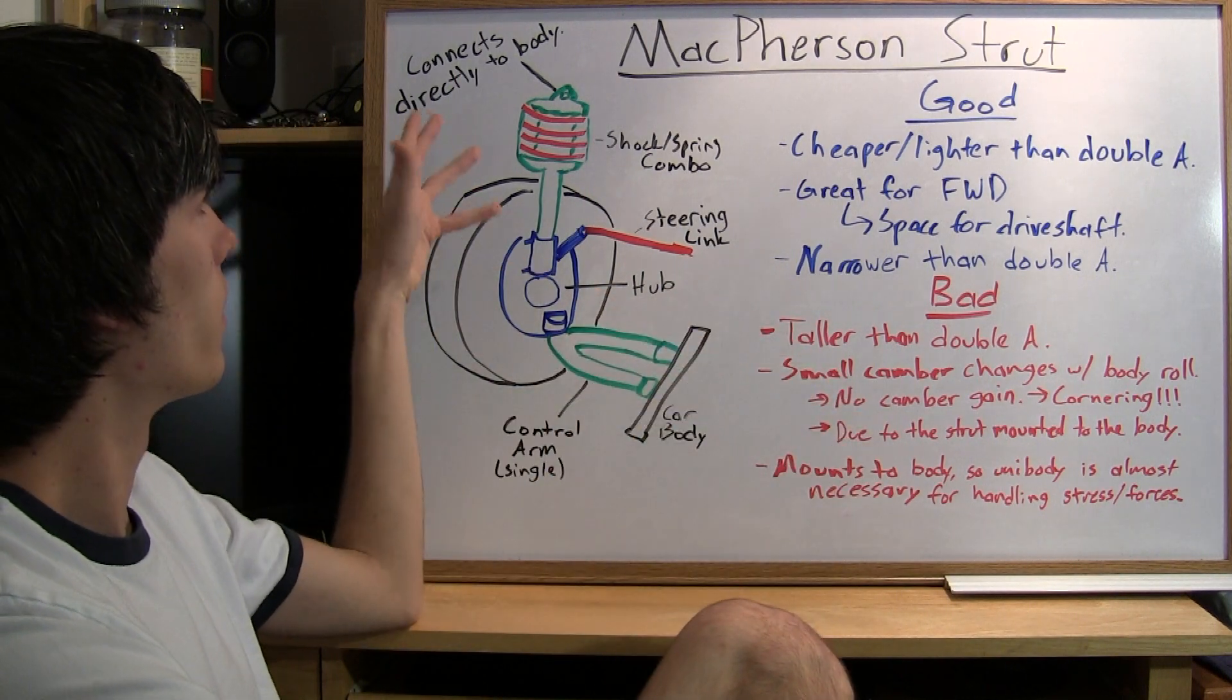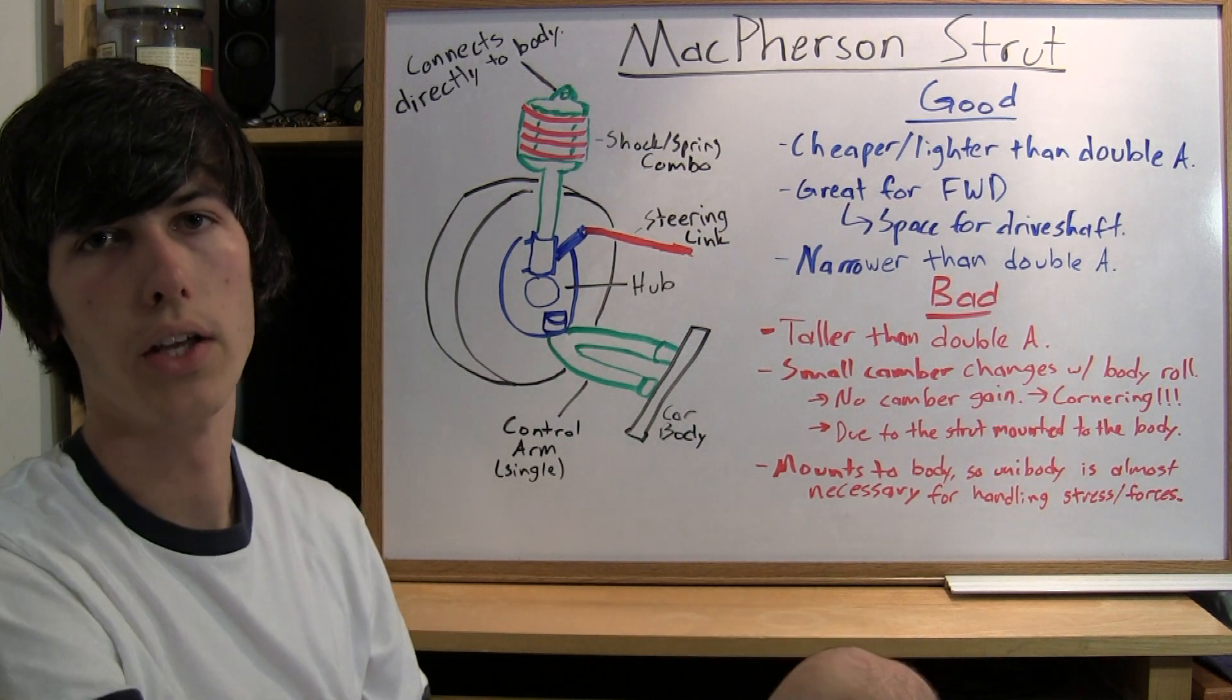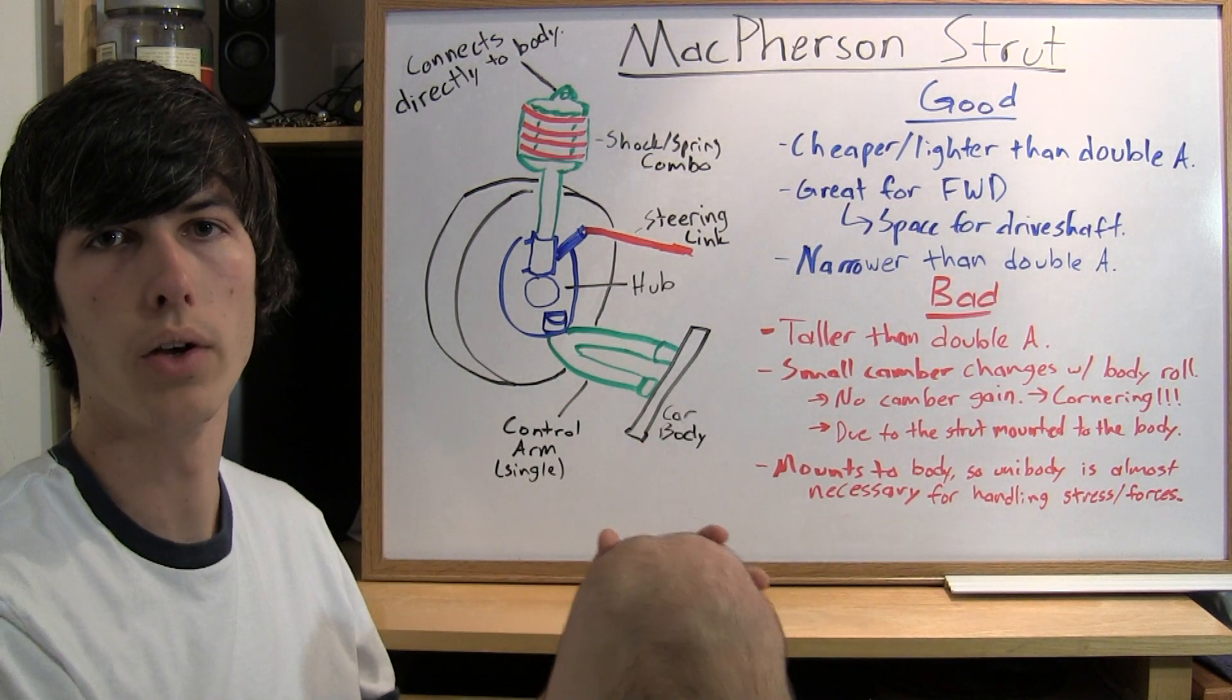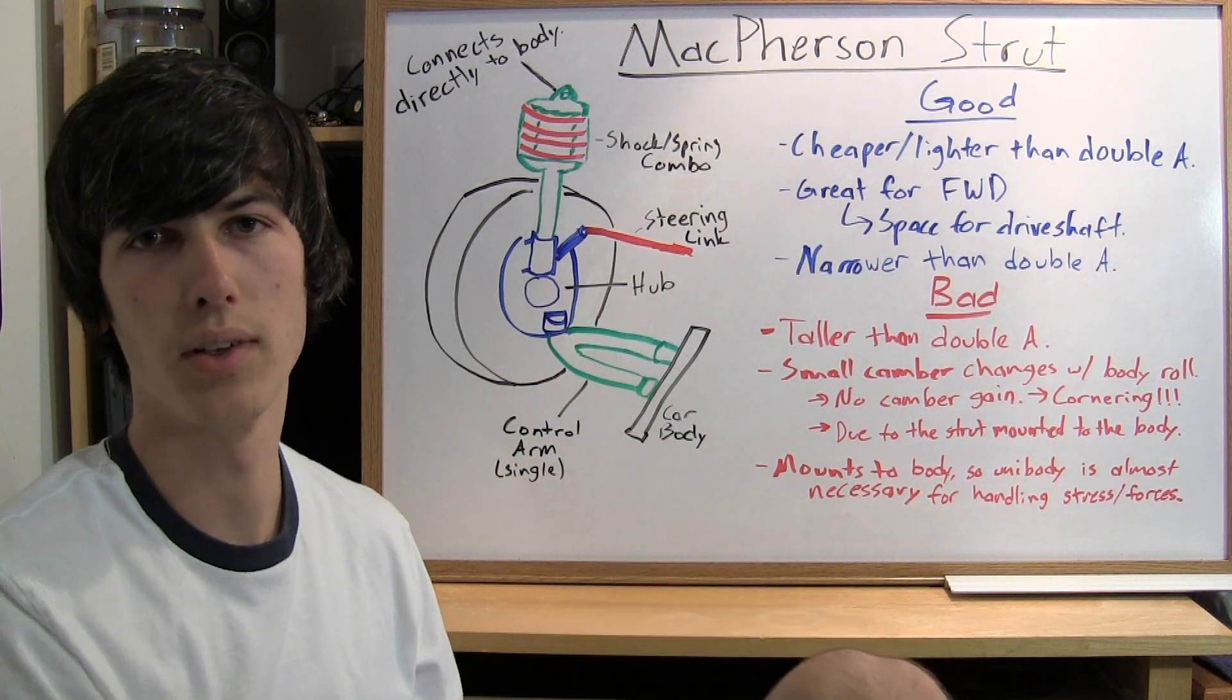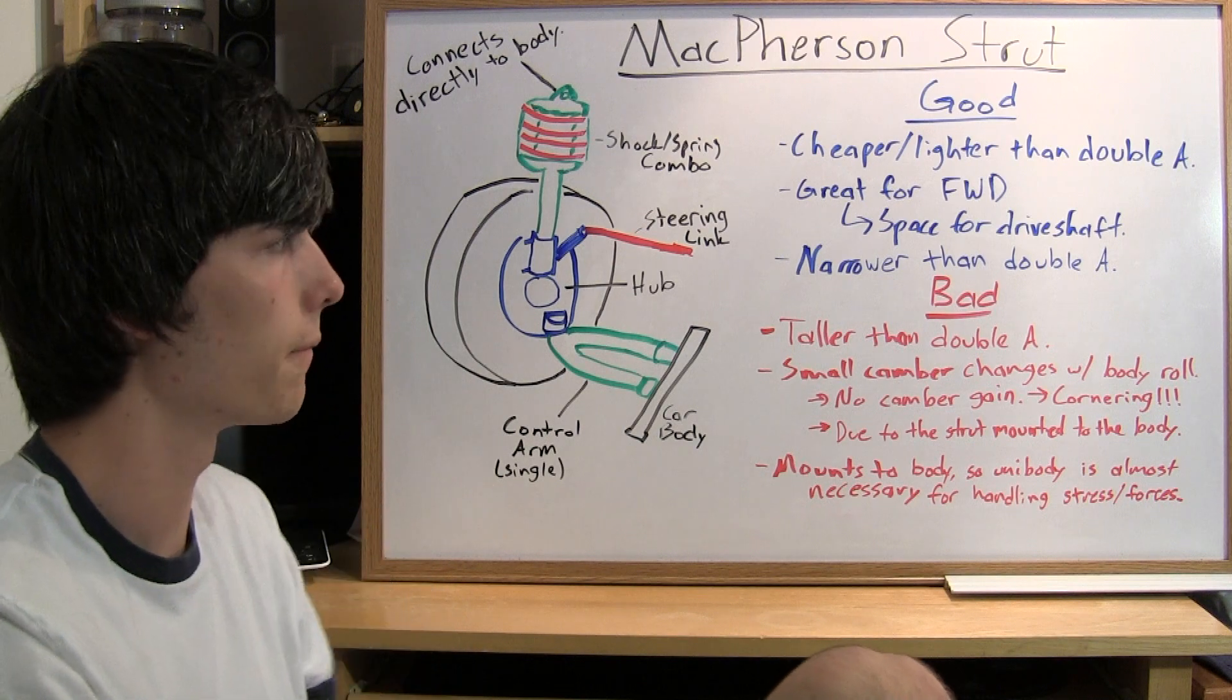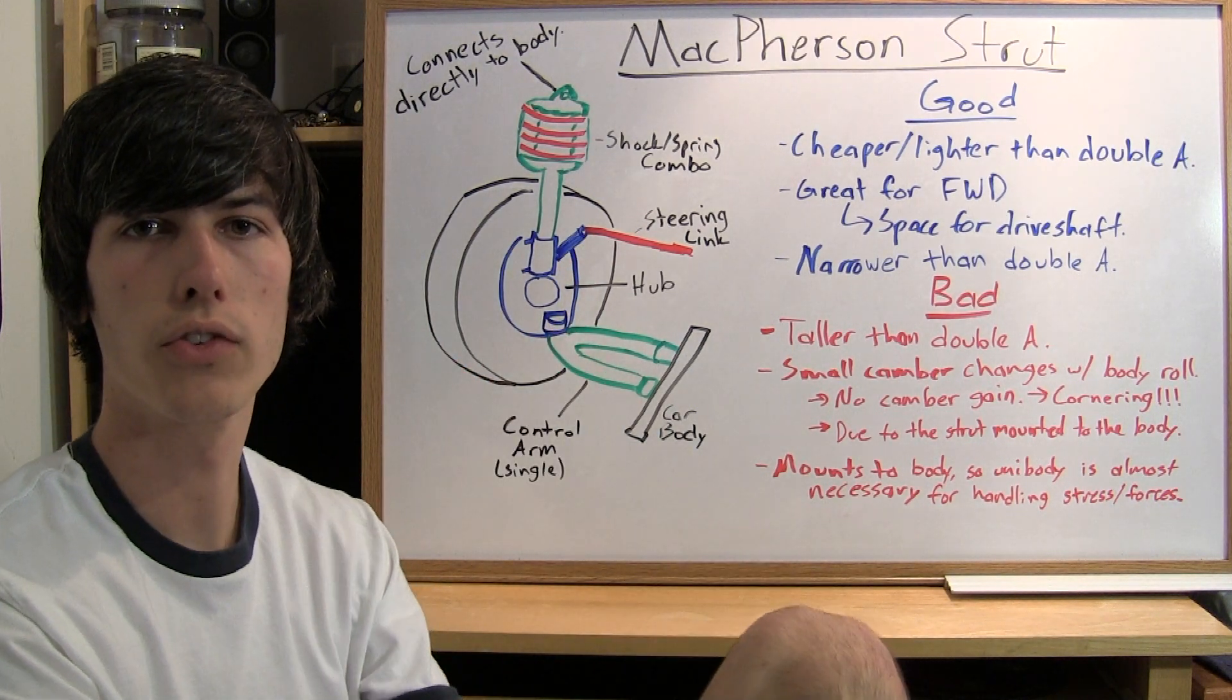One final thing is that this must mount to a body, so a unibody is basically necessary. You can't just have a frame and body because the body won't be rigid enough to mount to. But most of the time this isn't a problem, especially since nowadays almost all vehicles are unibody designed. That's a basic overview of the McPherson strut.